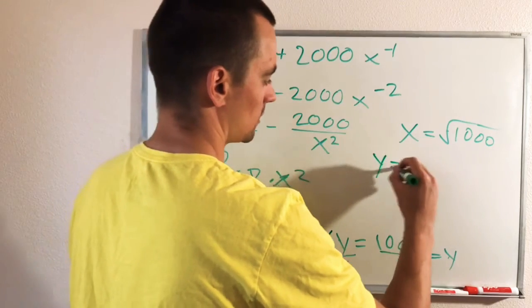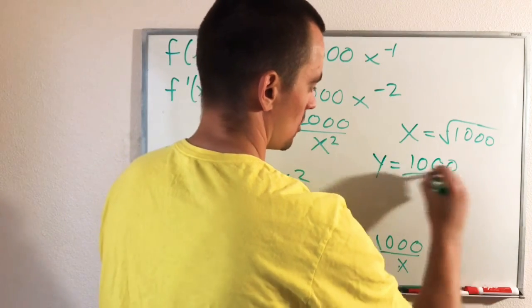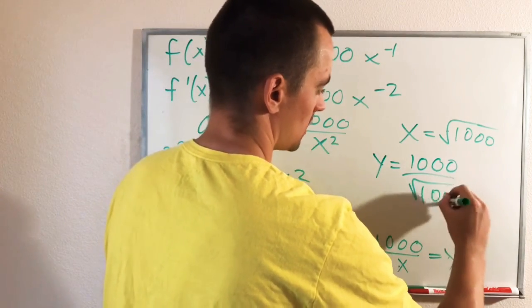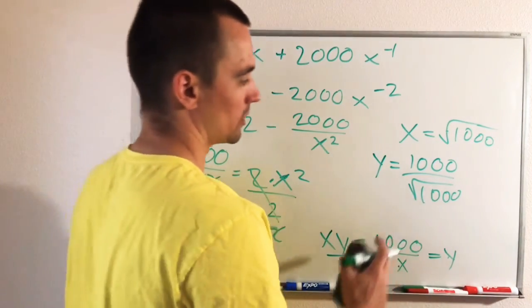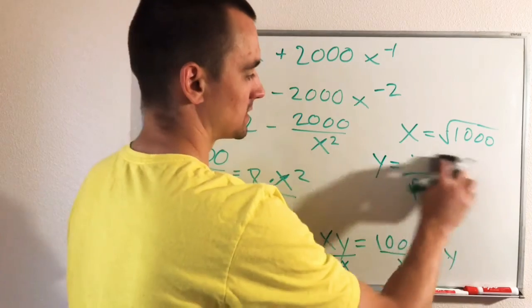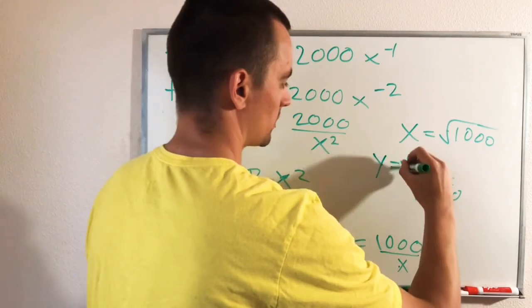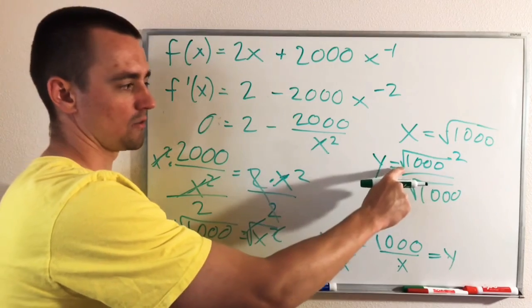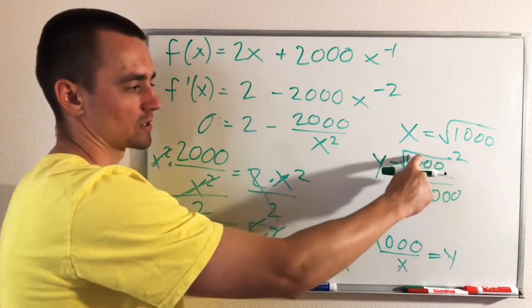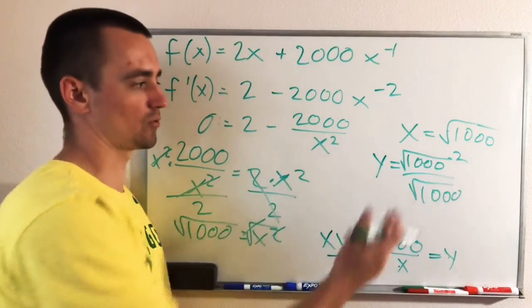So doing that, we're going to get Y equals 1,000 over the square root of 1,000, which we actually want to simplify. What you can do is think of 1,000 is the same as the square root of 1,000 squared, right? Because if you write it like this, the squared and the square root cancel out and you're just left with 1,000.